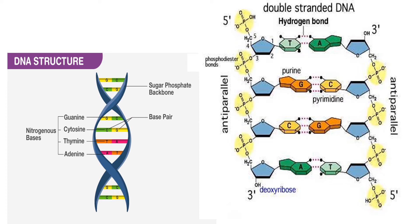The polynucleotides are composed of simpler monomeric units called nucleotides. Each nucleotide is composed of one of four nitrogen-containing nucleobases — cytosine, guanine, adenine, or thymine — a sugar called deoxyribose, and a phosphate group. The nucleotides are joined to one another in a chain by covalent bonds known as phosphodiester linkages between the sugar of one nucleotide and the phosphate of the next, resulting in an alternating sugar-phosphate backbone.